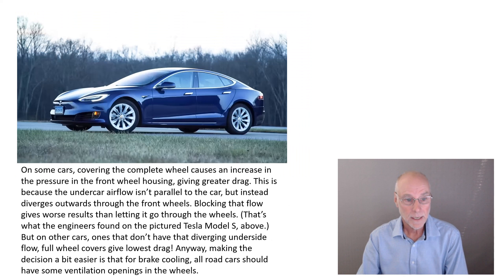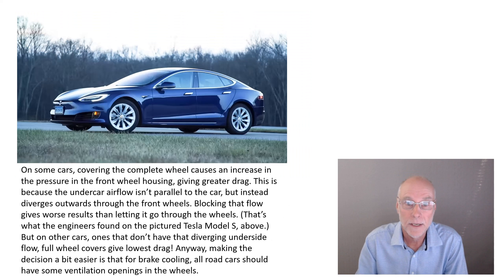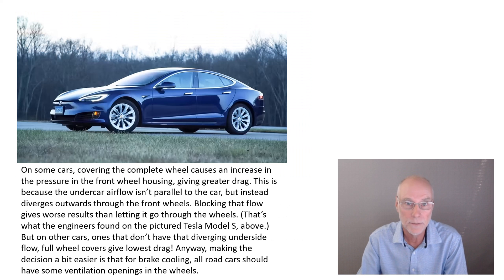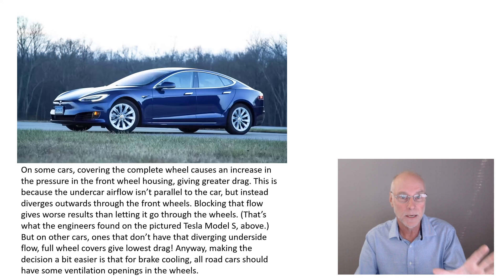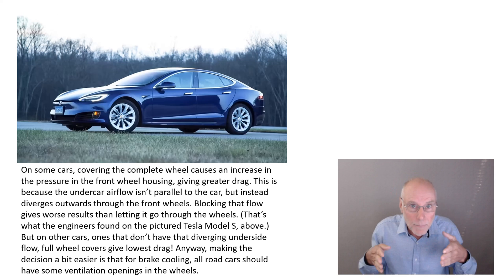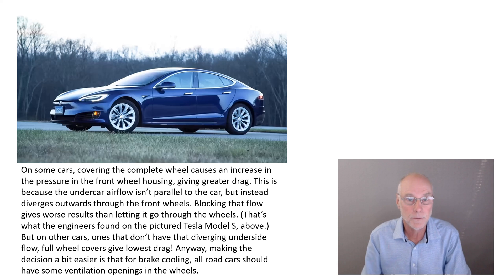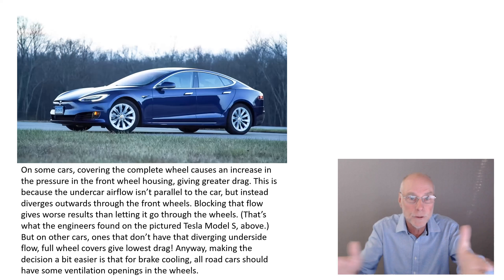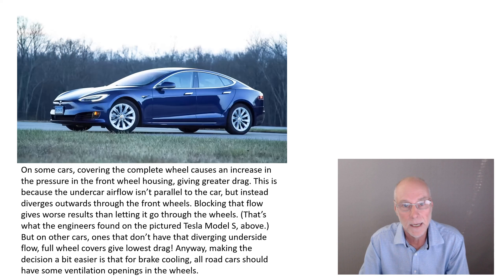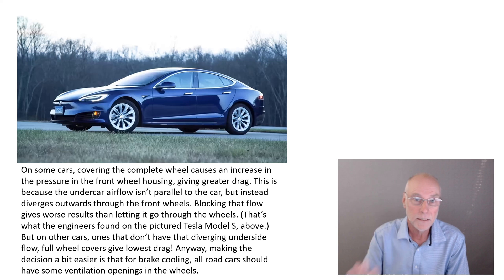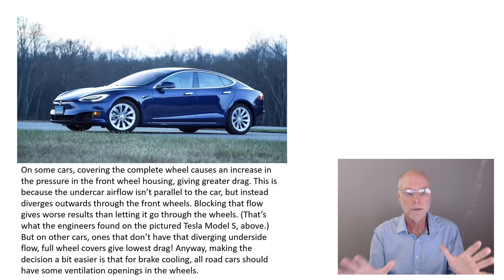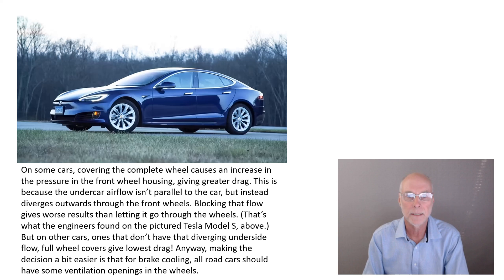Cars like this Tesla Model S — a really interesting technical paper written on the wheel design of that car — leaving a little bit of the spoke area open, so airflow coming under the car could pass out through those front wheels and diverge outwards, actually gave lower drag than completely enclosing the wheel. And there's another reason not to completely enclose a wheel, and that's brake cooling.